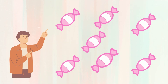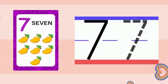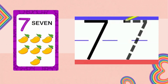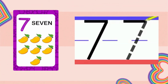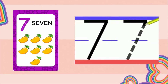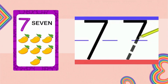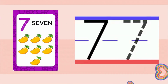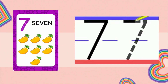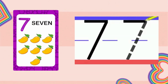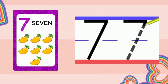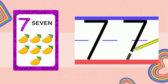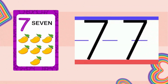These are 7 candies. Yummy yummy candies. To write number 7, we will start at the top and do a straight line across. Then we will do a diagonal line all the way to the bottom. Here we have 7 mangoes in the picture.